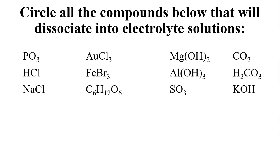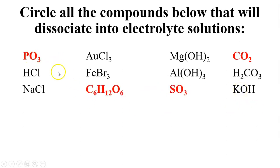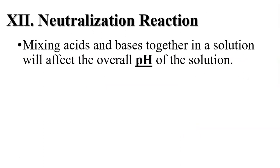Hydrochloric acid is an acid, so it will dissociate and become an electrolyte. Iron three bromide is an ionic compound, so it will dissociate. Aluminum hydroxide is a base, so it's ionic and will dissociate. Carbonic acid will dissociate as an acid. Sodium chloride will dissociate. Sugar (C6H12O6) will not — it's covalent. SO3 is covalent and won't dissociate. Potassium hydroxide is a base and will dissociate. The compounds in red are all covalent; everything else dissociates and becomes an electrolyte in solution.